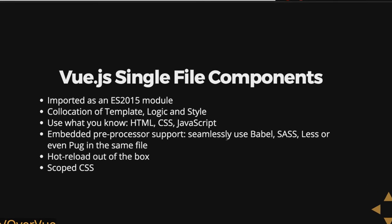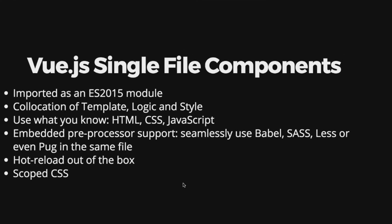When you define a single file component, it's imported as an ES2015 module. It takes the template, the component definition, all the styles, and compiles it into basically a render function — a collection of the template, the logic, and the style. You can use what you know: HTML, CSS, and JavaScript. But if you want to use something else, you just make sure you have that Webpack loader. You can seamlessly use Babel, Sass, Less, or even Pug in the same file, with hot reloading out of the box and scoped CSS.